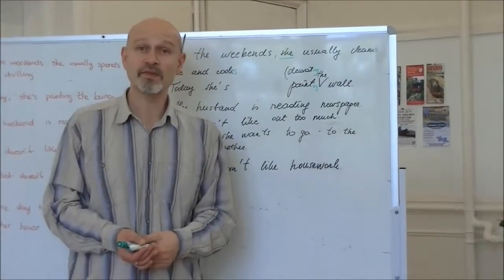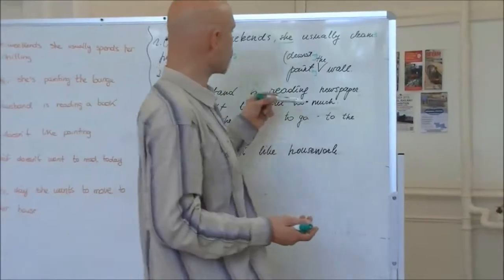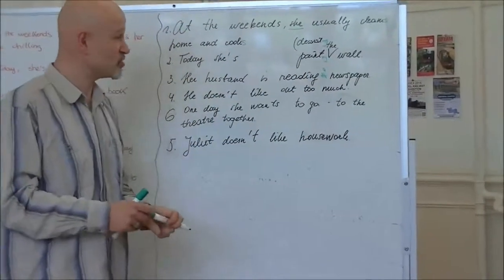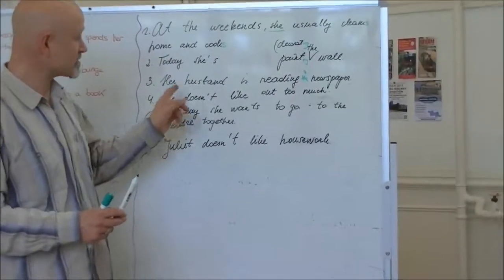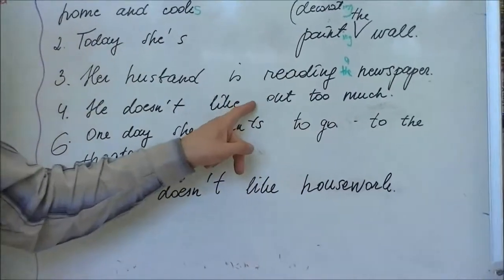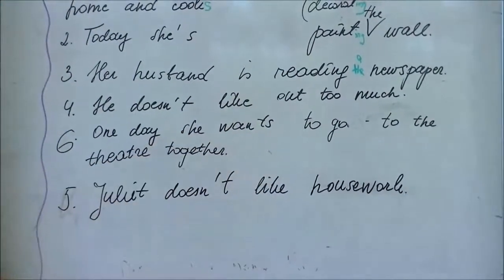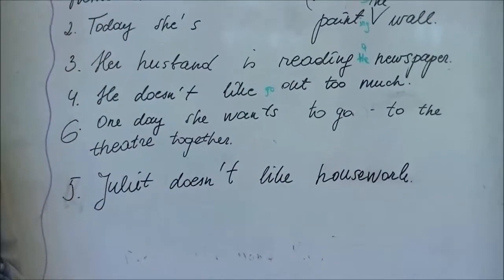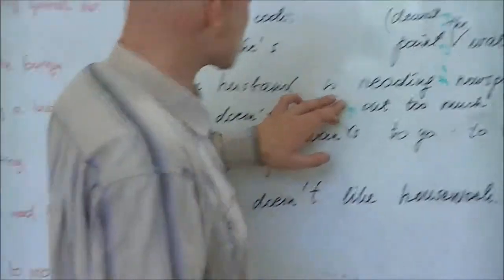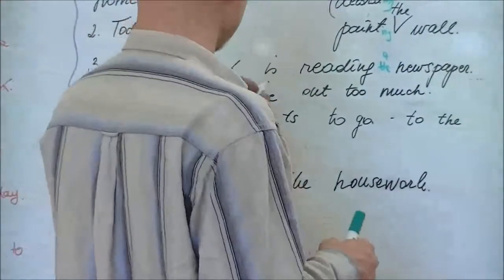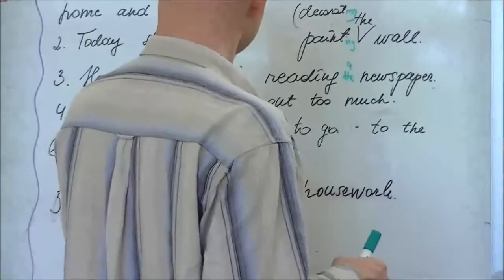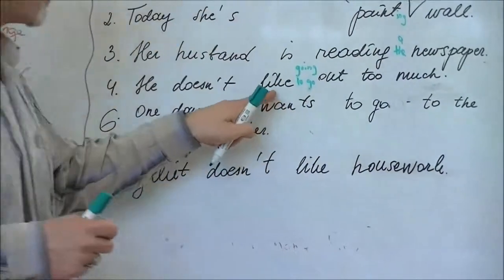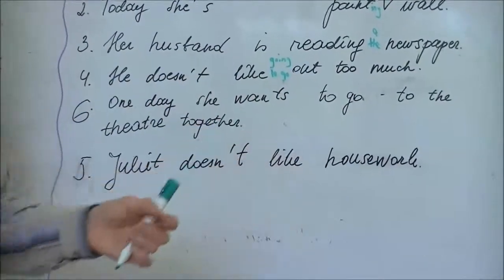A newspaper or the newspaper? Yes, we can use either one of those. He doesn't like out too much, there's a word missing here. He doesn't like go out. He doesn't like, still a problem. Going out. He doesn't like to go or he doesn't like going. Remember, with like, you can use either construction, it's up to you.